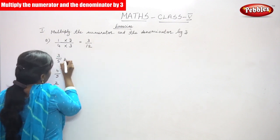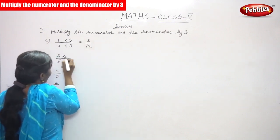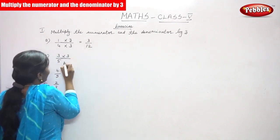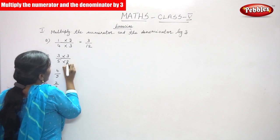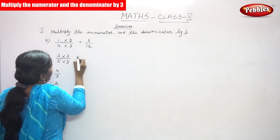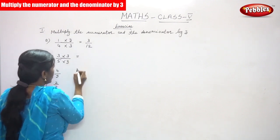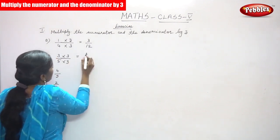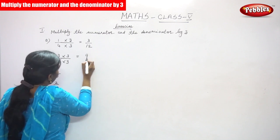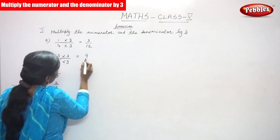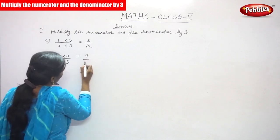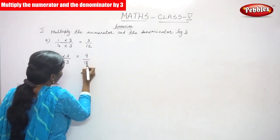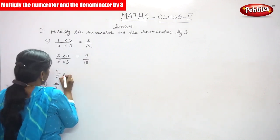The next sum — again, you have to multiply the numerator and the denominator by 3. So, 3 into 3, you can get 9, and 5 into 3, you can get 15.